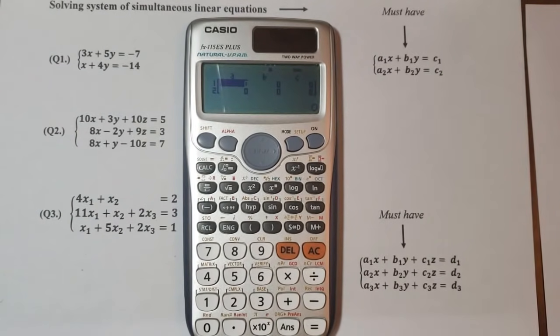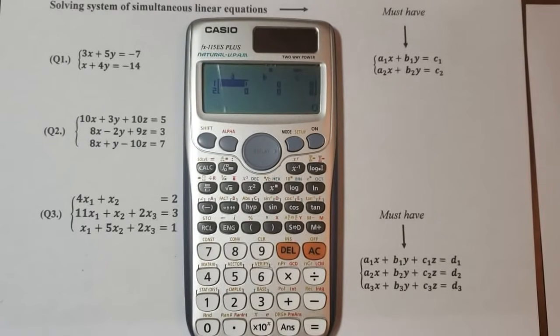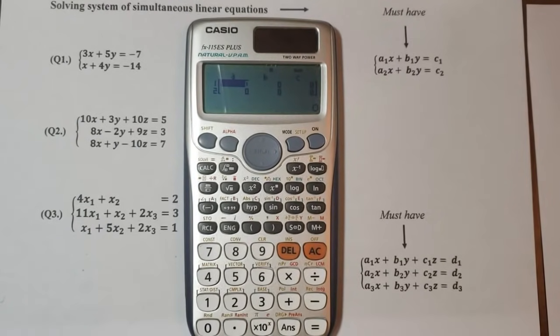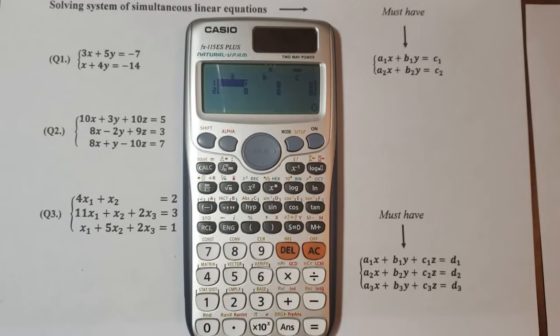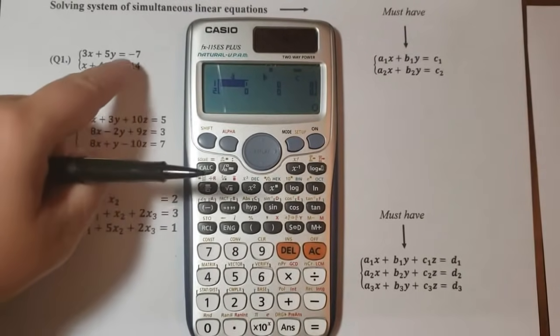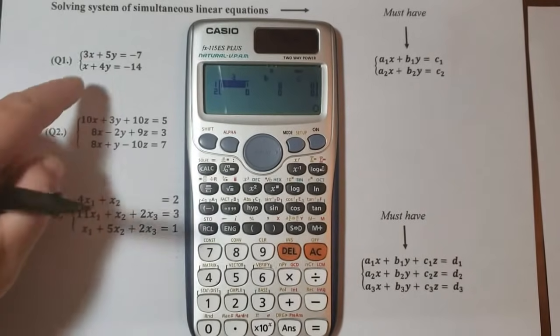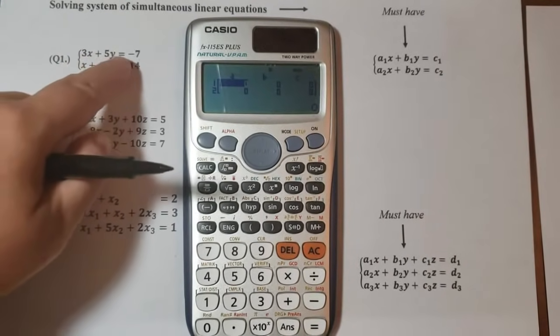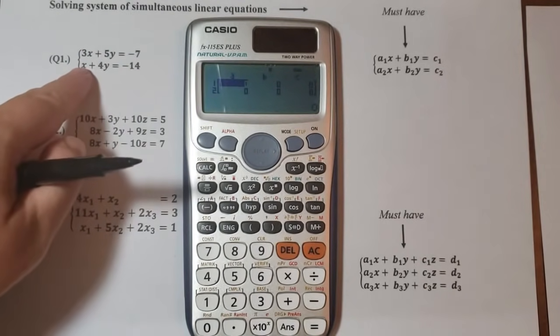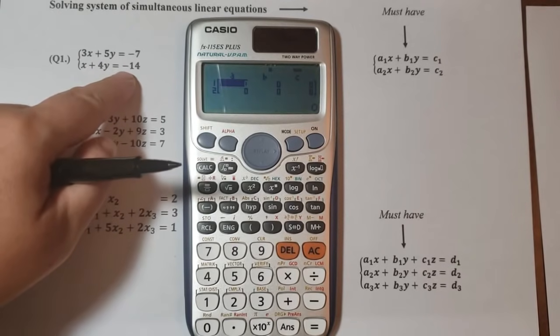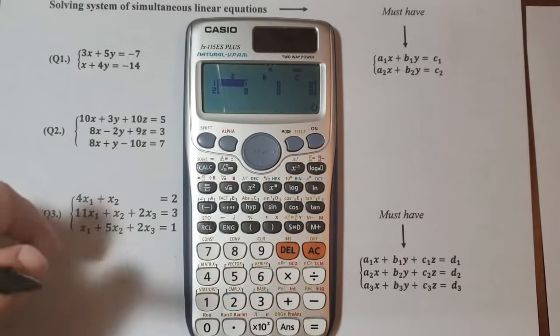In the first question that I have here, first we have to figure out the coefficients and the variables and of course the numbers, and then we will insert these values here in the calculator. So we have 3, 5, minus 7, 1, 4, minus 14. So enter these values now.